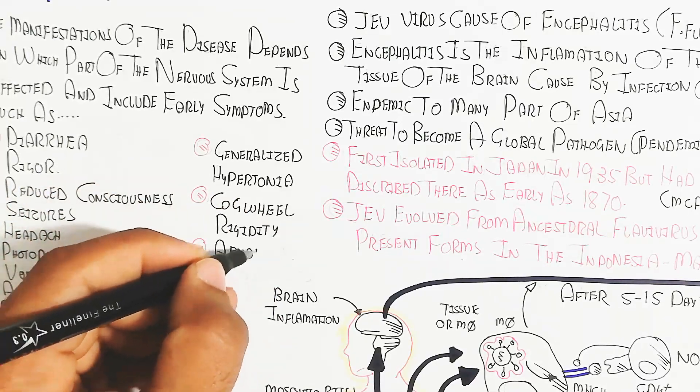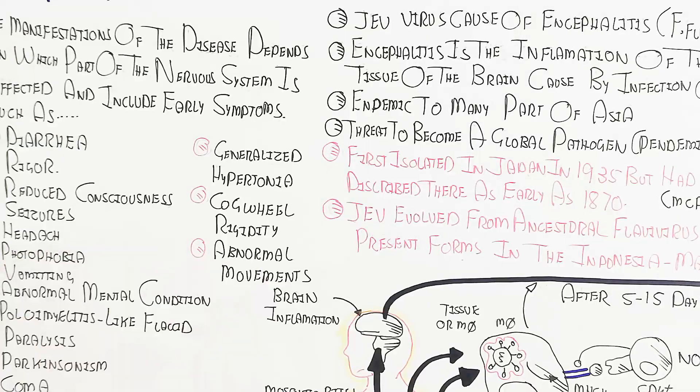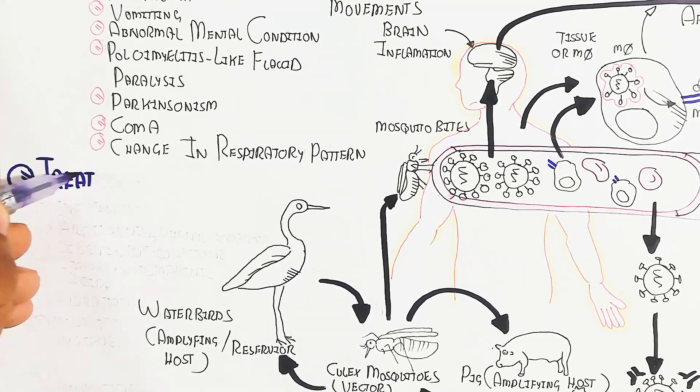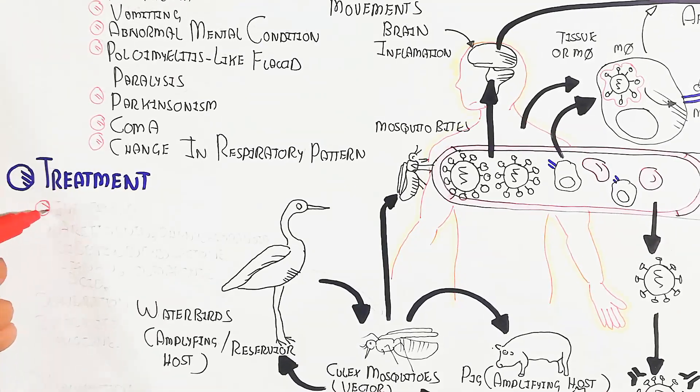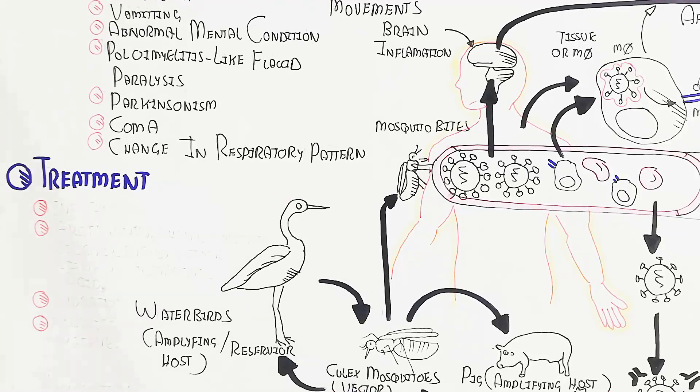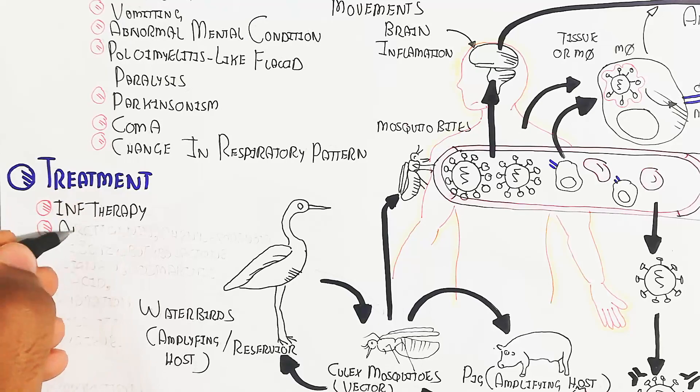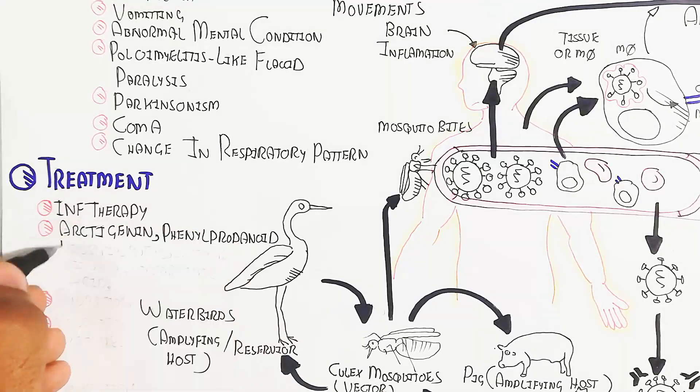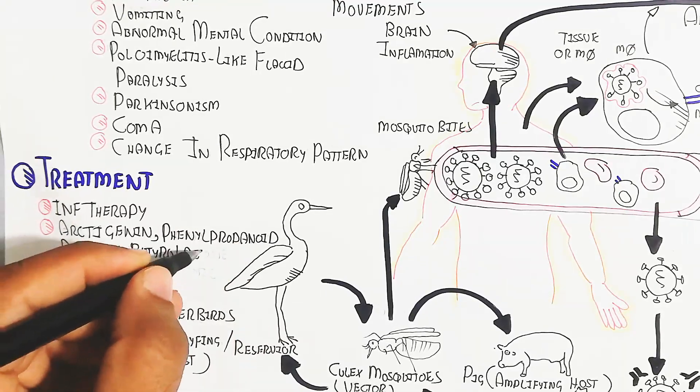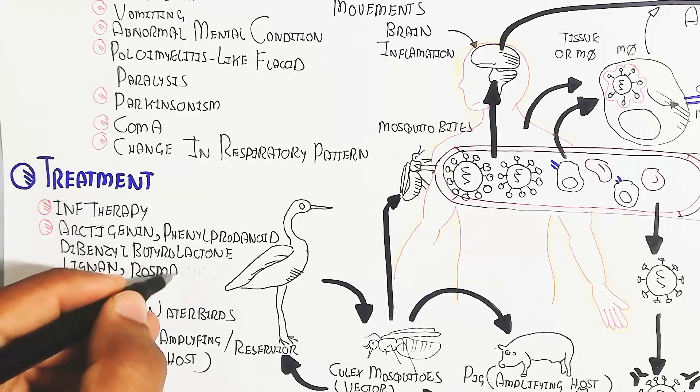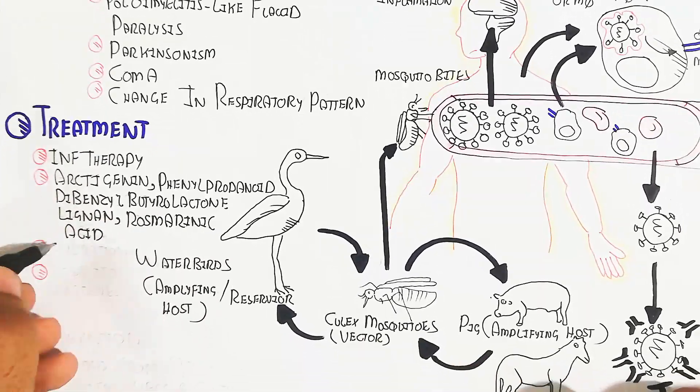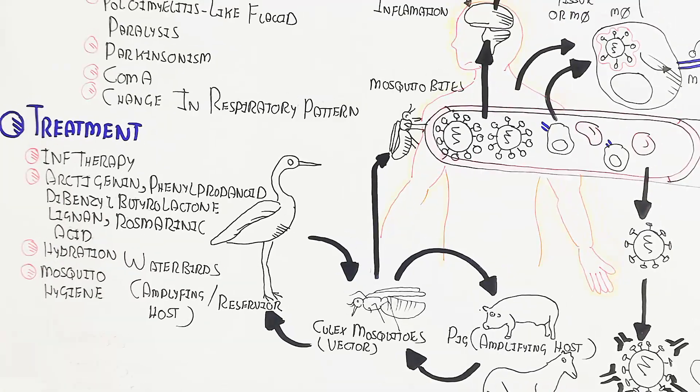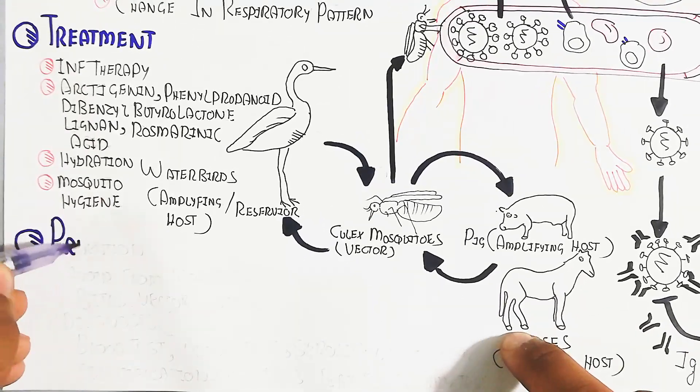Treatment: Interferon therapy is not very common, but naturally occurring compounds like arctigenin, phenylpropanoid dibenzyl butyrolactone lignan, and rosemary acid are used. Hydration and fluid transfusion through intravenous routes are also important, along with mosquito hygiene.